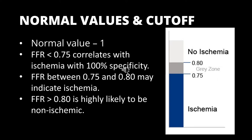FFR values less than 0.75 are associated with the presence of inducible ischemia. Patients with stable CAD who have FFR values more than 0.8 have very good prognosis even without PCI. Clinical decision making in the gray zone of FFR values between 0.75 and 0.8 is controversial. However, studies have shown that in patients with gray zone FFR between 0.75 and 0.8, revascularization can cause significant reduction of major adverse cardiovascular events.